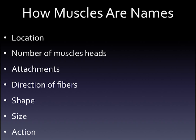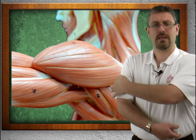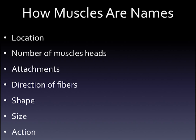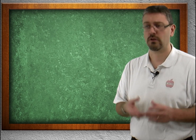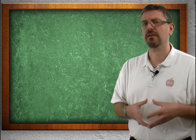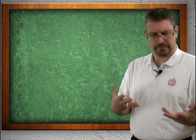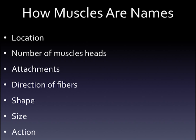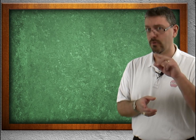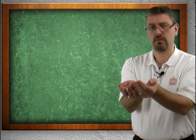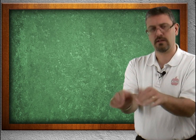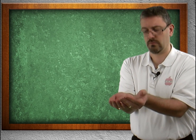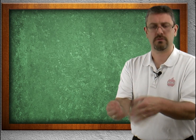We have the directions of the fibers — the oblique and rectus. Rectus means straight, telling you which way the muscle fibers are going. We have the shape of the muscle — the deltoid is a great example; it's shaped like the Greek delta. We have size: maximus means big, minimus means small — the gluteus maximus is bigger than the gluteus minimus. And then we have the action — what does it do? The pronator and the supinator. The supinator makes the forearms do this, and the pronator makes them do this.